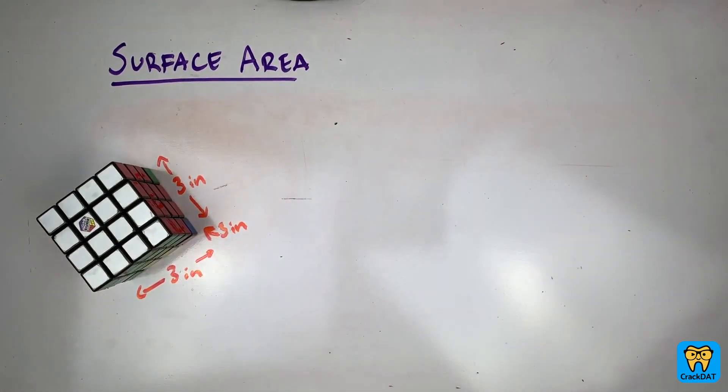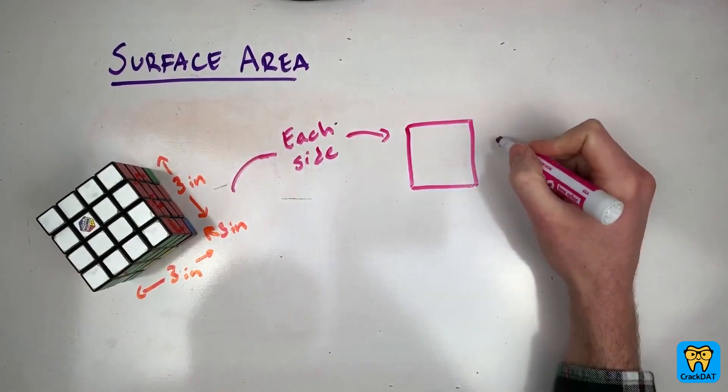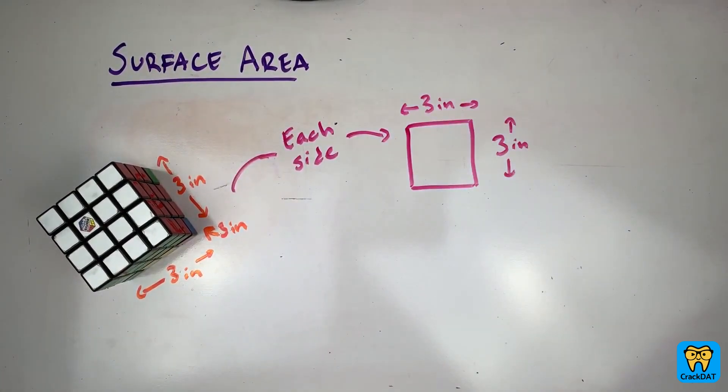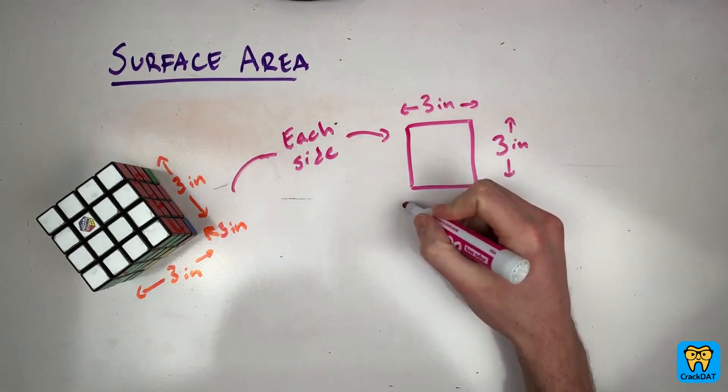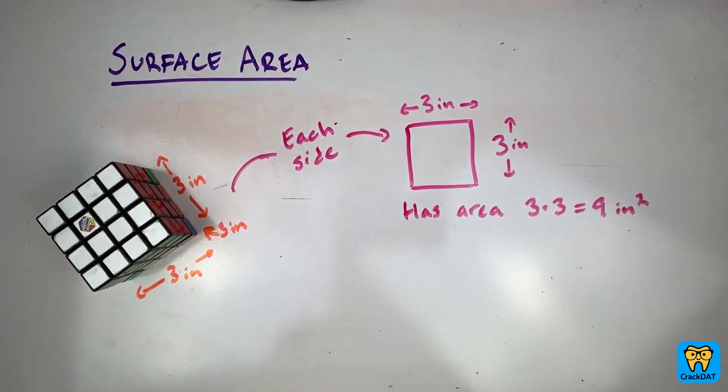Here it's three inches. Then each side of the cube is a square with a length three and width three. So each side has an area of length times width, which equals three times three, which equals three squared, which equals nine.